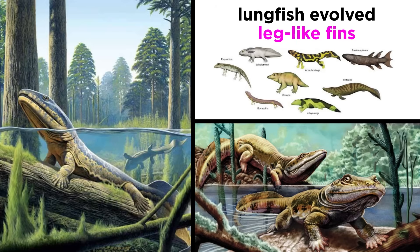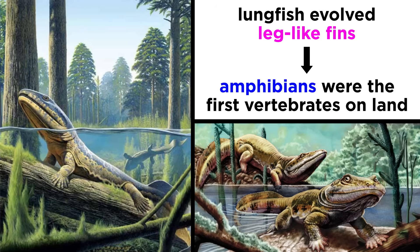Land plants laid the foundation for brand new ecosystems as other organisms moved into forests looking for food and shelter, the most consequential being a population of lungfish that evolved leg-like fins. These new animals — amphibians — were the first vertebrates to walk on land. All vertebrates, from dinosaurs to humans, share a common ancestor with amphibians.